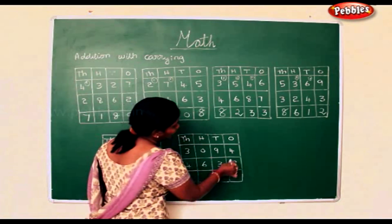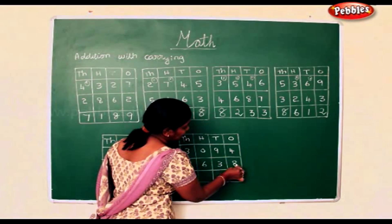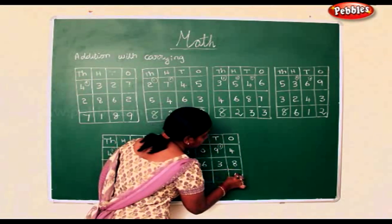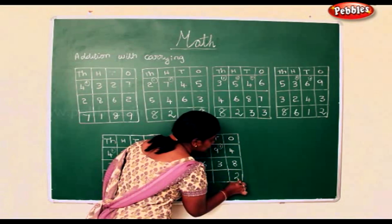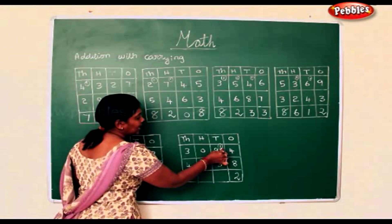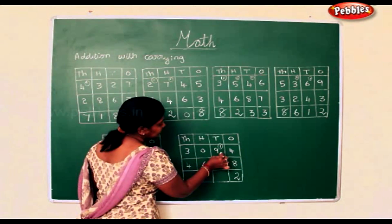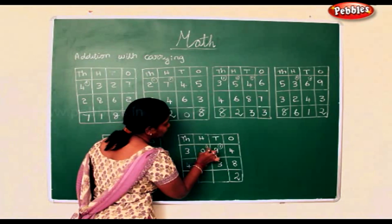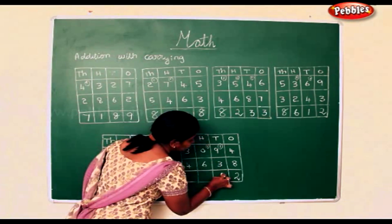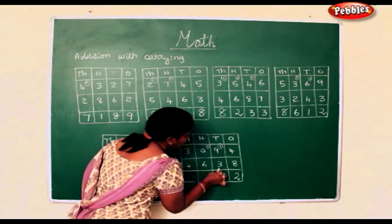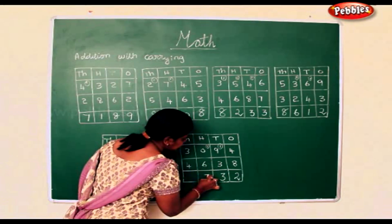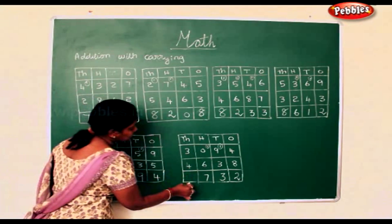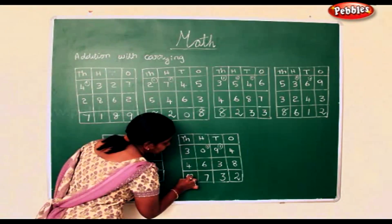Now here. 4 add 8 is 12. 1 is carried over and 2 is got down. 1 add 9 is 10. 10 add 3 is 13. 1 goes up. 3 comes down. 1 add 6 is 7. 3 add 4 is 8. Sorry, 7. 1 add 5 is 8.